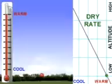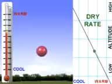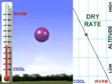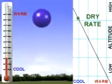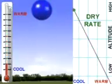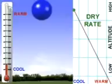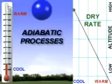Atmospheric pressure decreases with altitude, so as an air parcel is forced to rise, it expands. The expanded parcel cools, not from loss of heat energy, but because energy is dispersed over the larger volume. Temperature changes resulting from pressure changes are called adiabatic. An adiabatic process does not gain or lose energy from the surrounding environment.